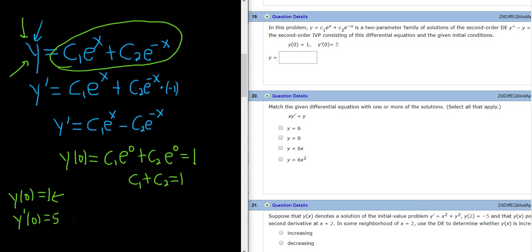Let's go ahead and use our other condition. So y prime of 0 equals, so now we're looking at the derivative. So it'll be c1 e to the 0 minus c2 e to the negative 0, which again is just 0, except this time it's equal to 5. So it gives us c1 minus c2 equals 5.